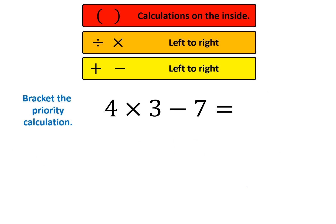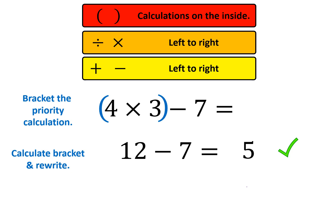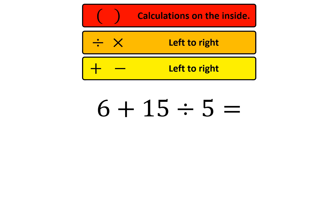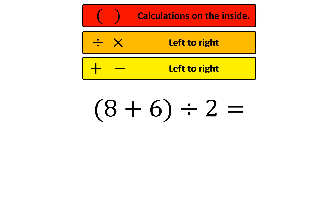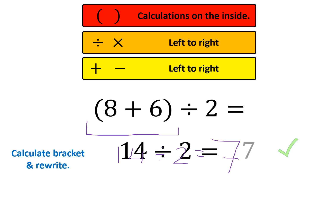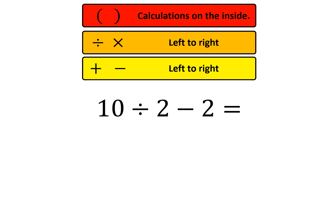Put brackets around 4 and 3: that becomes 12, then 12 subtract 7 is 5. That's the only answer. This next one: put the brackets around 15 and 5, so the division goes first — 15 divided by 5 is 3 — giving 6 plus 3 which is 9. Next: 8 plus 6 is 14, divide that by 2 and you get 7. Then the division comes first: 10 divided by 2 is 5, and 5 subtract 2 equals 3.